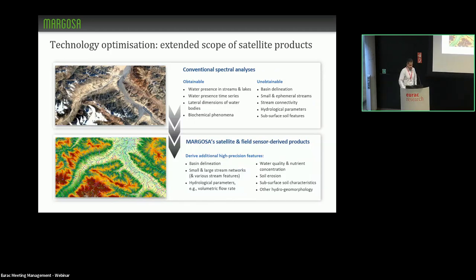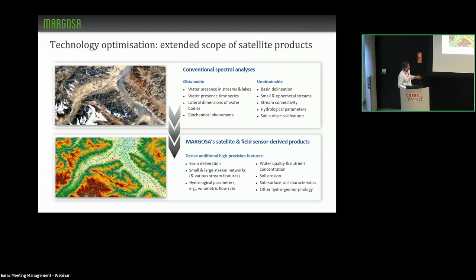With conventional spectral analyses, you can get water presence in streams and lakes, time series for that water presence, lateral dimensions of water bodies, and observation of certain biochemical phenomena. But you can't get basin delineation, small and ephemeral streams, stream connectivity, and other features. With the Hydrography 90M dataset, we overcome those limitations by accessing basin delineation and stream networks in high resolution. From that, we can derive hydrological parameters like flow rates, water quality, nutrient flows, and nutrient concentration.